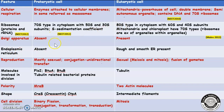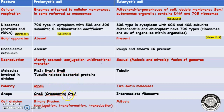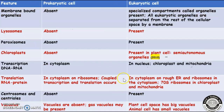Golgi apparatus and endoplasmic reticulum are both absent in prokaryotic cells but present in eukaryotic cells. ER is of two types: rough and smooth endoplasmic reticulum. Reproduction in prokaryotes is mostly asexual and conjugation involves unidirectional transfer, while in eukaryotes there is fusion of gametes — both male and female contributing to the next offspring. Molecules involved in division, polarity, and shape in eukaryotes are tubulin, actin, and intermediate filaments. Cell division in prokaryotes is binary fission, while in eukaryotes it occurs by mitosis.